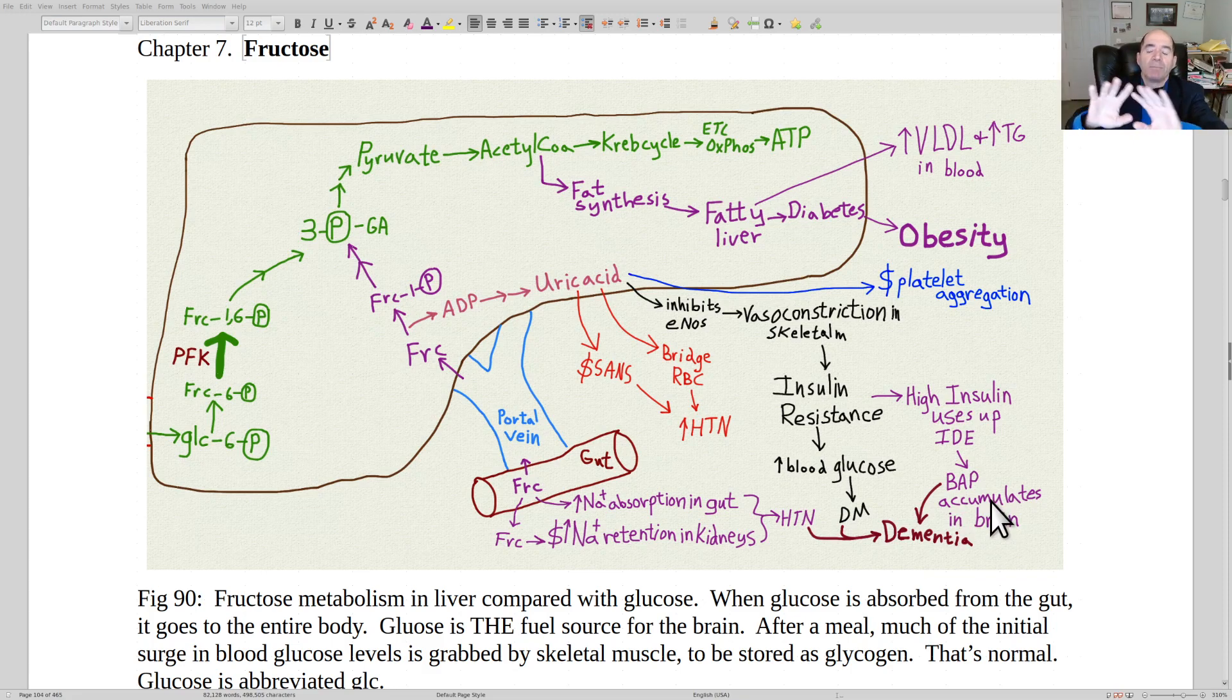I'm giving you here three major ways that fructose can contribute to cognitive decline. Insulin resistance through the excessive uric acid production and through the elevated blood lipids contributing to this process and the obesity related to this process.